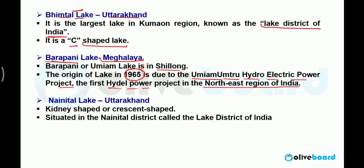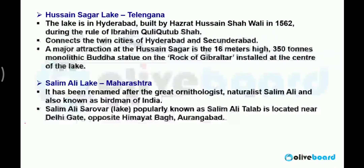Nainital Lake is situated in the Nainital district of Uttarakhand. It is a kidney-shaped lake.